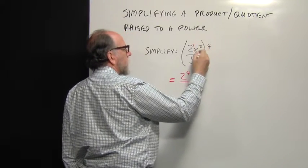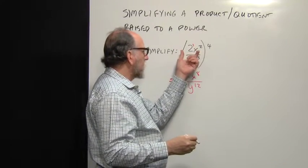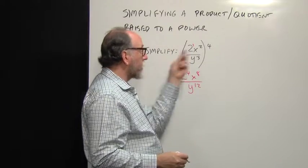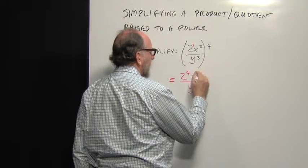So those exponents get multiplied because it's two x squared repeated four times. If we add up four twos, that's the same as four times two, or eight. That's the idea behind that.